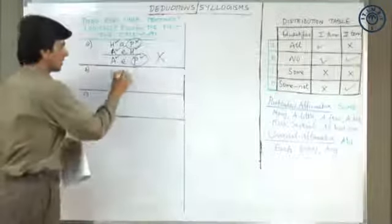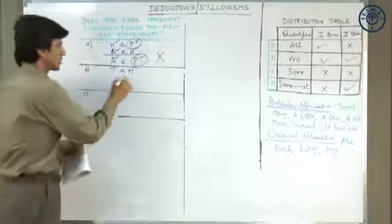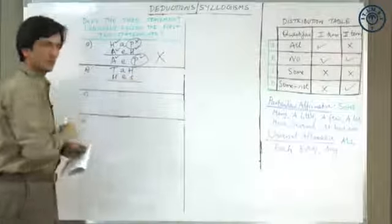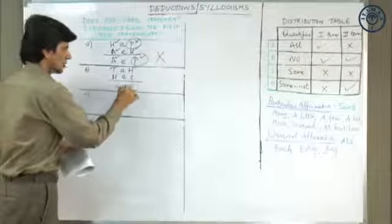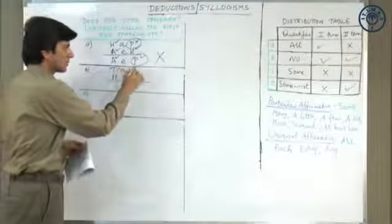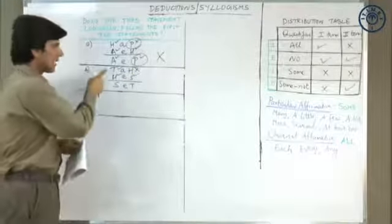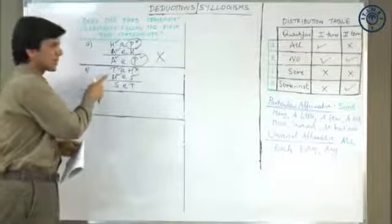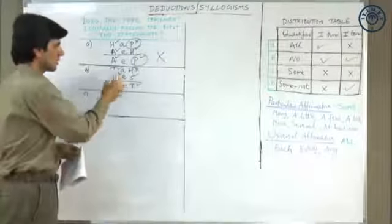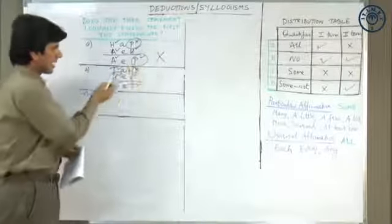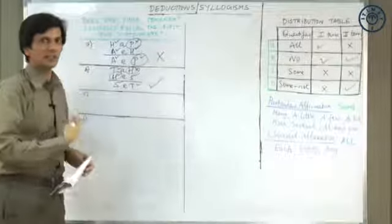Part B: all teachers are helpful — distributed, not distributed. No helpful is selfish — universal negative, so both distributed. The derivation is no selfish is a teacher. Both premises are universal, one is negative, so the conclusion must be negative with both terms distributed. The middle term is distributed at least once, and both other terms T and S are distributed in the conclusion. Hence this is a valid conclusion.